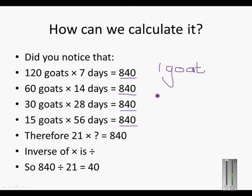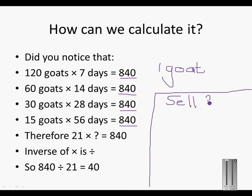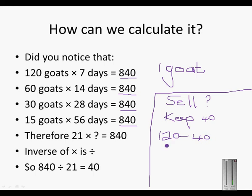So remember, the question was how many goats must he sell. If he can keep 40 — and we just calculated the 40 — he must sell 120 goats minus the 40 that he can keep. He must sell 80 of his goats. And that is the application of direct and indirect proportion.